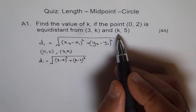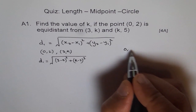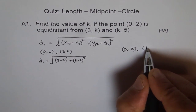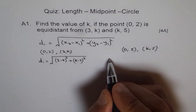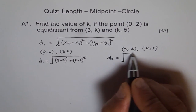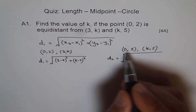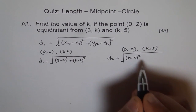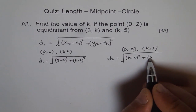The distance between (0,2) and (k,5) — let us say d2 — is the square root of (k minus 0) square plus (5 minus 2) square.